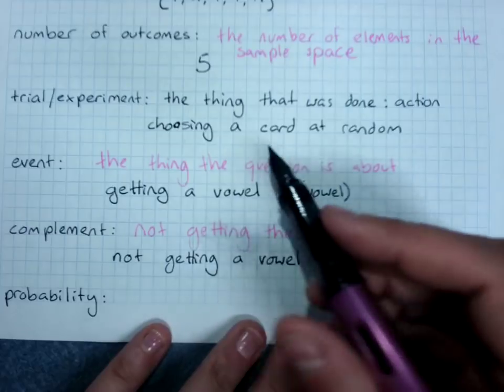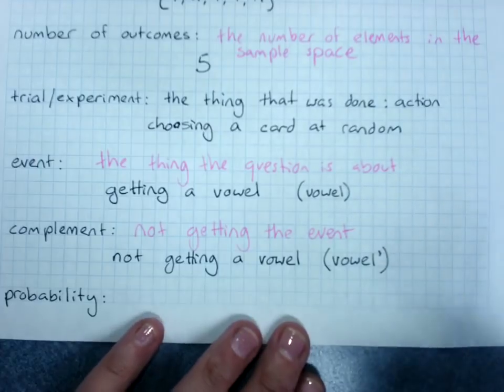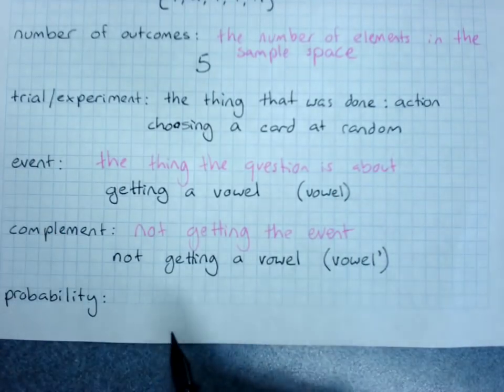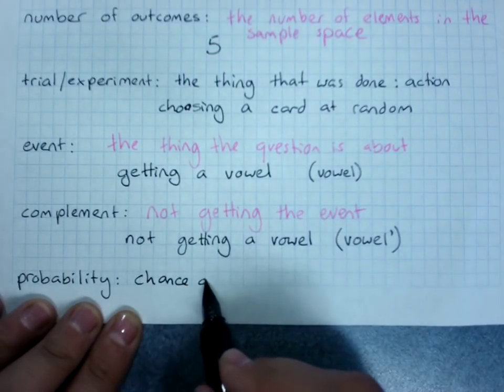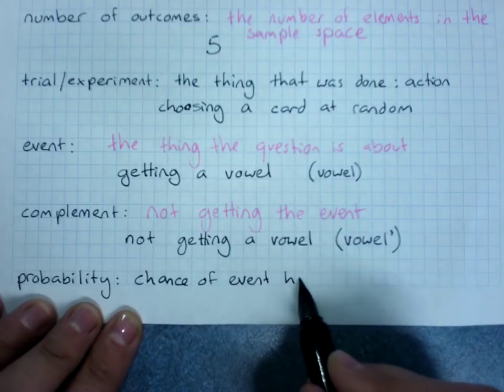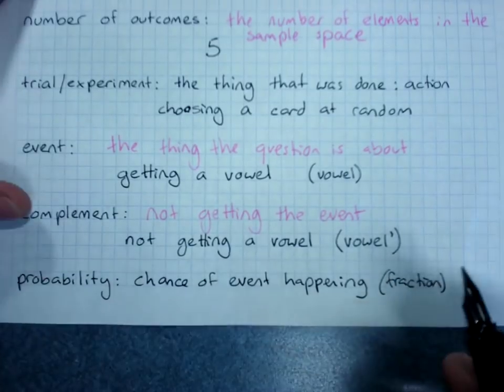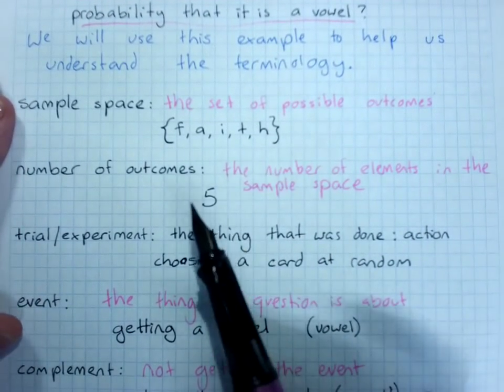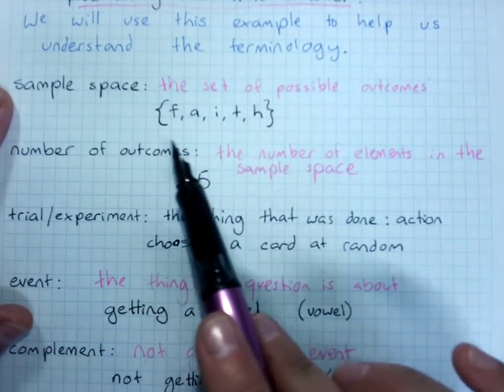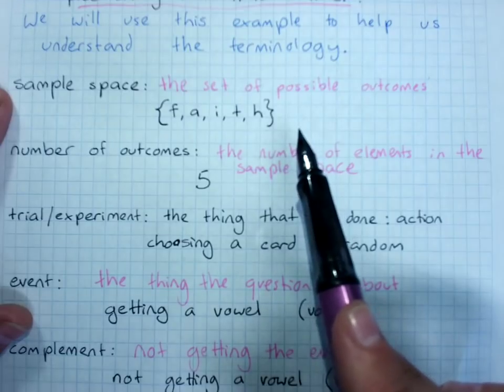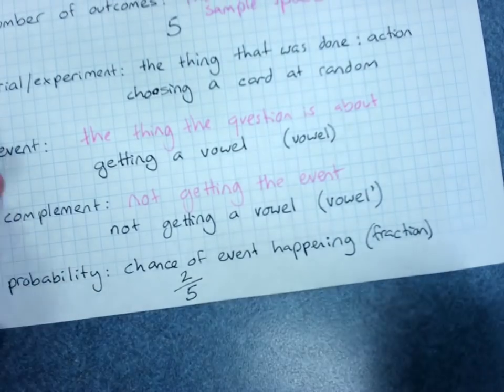It's worth noting that the two probabilities have to add up to one, because there's no other possibilities out there apart from getting a vowel or not getting a vowel. And the probability of course is the chance of it happening, of the event happening, as a fraction. So in this one, the number of ways of getting a vowel is one, two, and out of the total number of outcomes, that's two out of five. And we'll learn more about the probability as well.